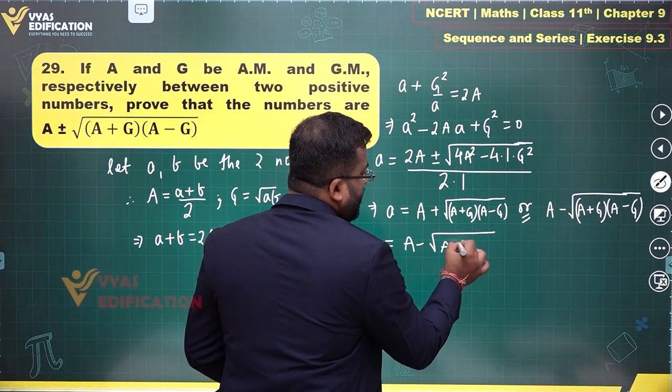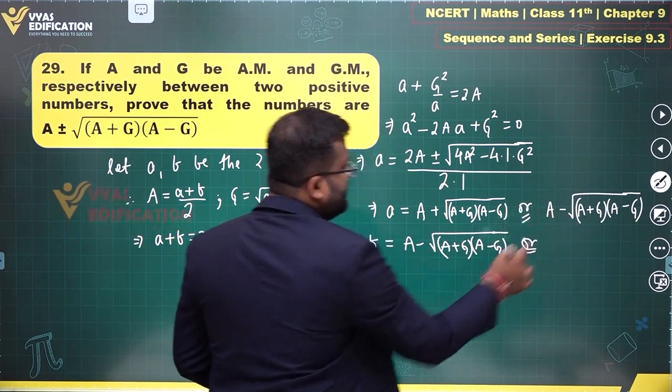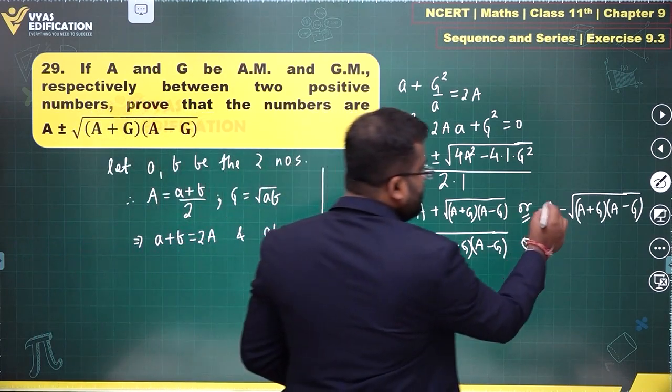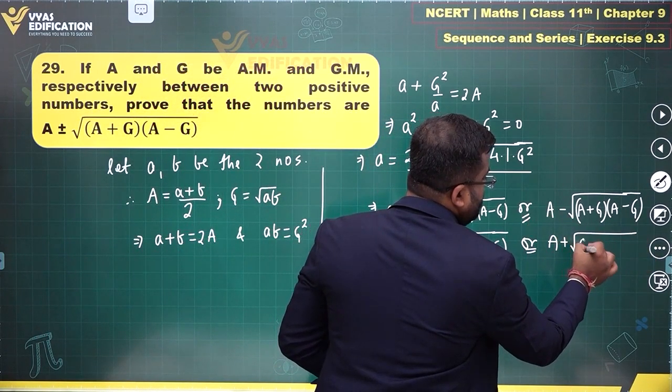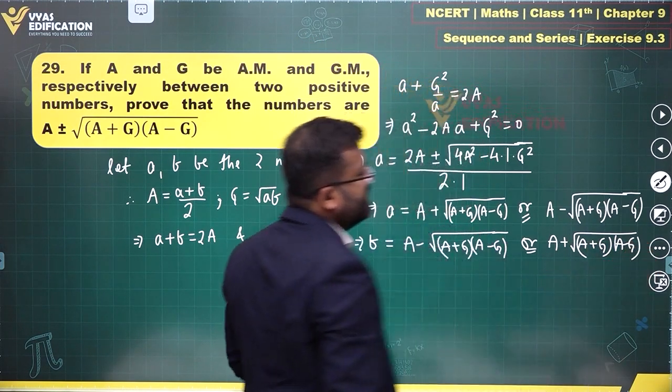in the other case, 2A minus that value will be A + √((A+G)(A-G)).